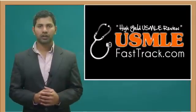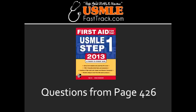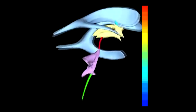Welcome to USMLEfasttrack.com. The section we're going to talk about today is from First Aid for the USMLE Step 1, 2013 edition, page 426, Ventricular System of the Brain.